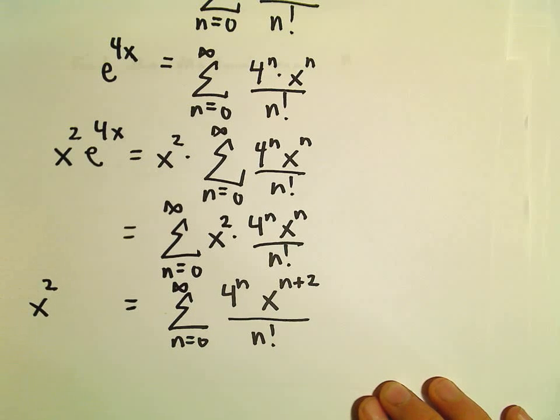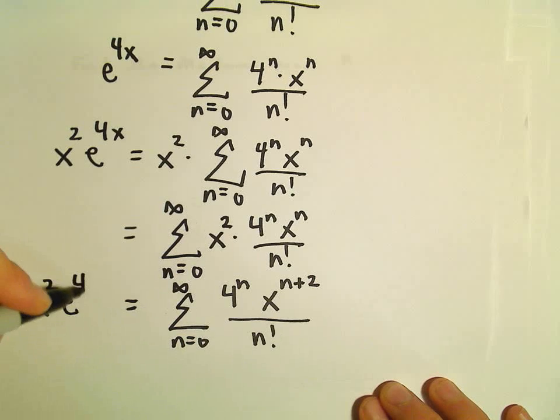And now we have our series representation for x squared times e to the 4x.